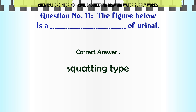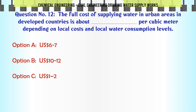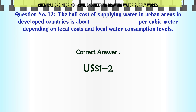The correct answer is Squatting type. The full cost of supplying water in urban areas in developed countries is about how much per cubic meter, depending on local costs and local water consumption levels? A. US $6-7, B. US $10-12, C. US $1-2, D. US $11-12. The correct answer is US $1-2.